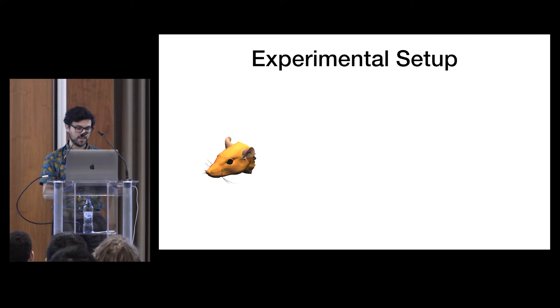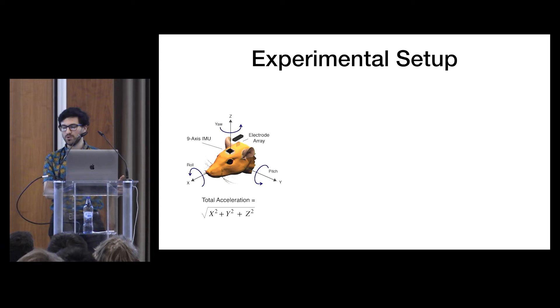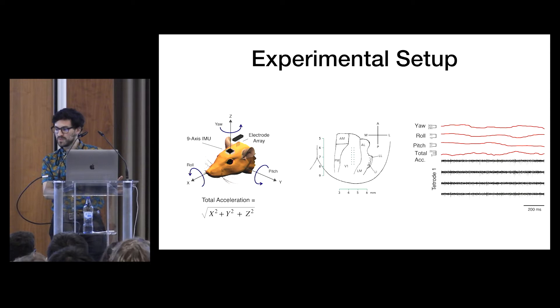So we implant a 16-tetrode array into V1 in the right hemisphere. We also attach a 9-axis combined accelerometer, magnetometer, and gyroscope on the animal's head. And this essentially tells us the animal's yaw, roll, and pitch signals, which are its head direction in allocentric space in 3D. We also get its total acceleration, which is just the norm of its linear acceleration along the three axes. And we'll use this as a proxy for the animal's overall movement.